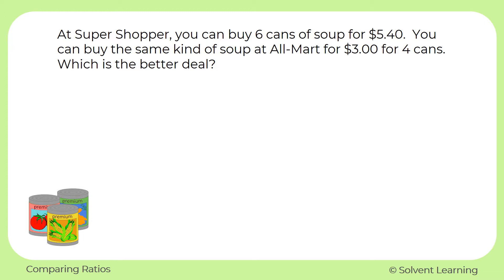At Super Shopper you can buy six cans of soup for five dollars and forty cents. You can buy the same kind of soup at All-Mart for three dollars for four cans. Which is the better deal? To compare these prices and see which one is the better deal, it would be helpful to break it down and see the cost for one can. If we can figure out the unit price at each store, we'll be able to tell which store has the better deal.